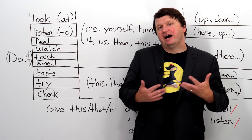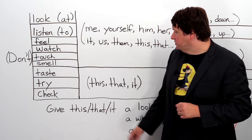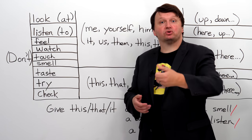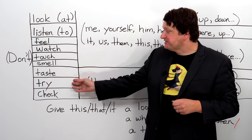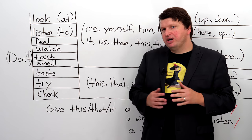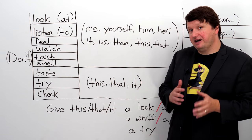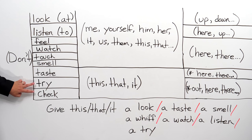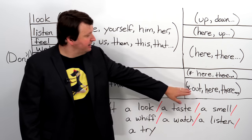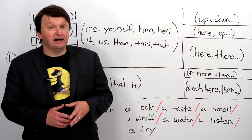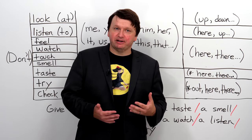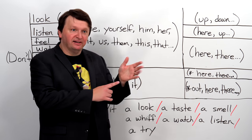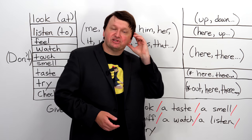Try and check can both mean to sample something. Try this, try that, try it — usually to taste food when we're talking about sensory verbs specifically. You can also ask someone to check something — to verify its taste, for example. With phrasal verbs, you can say check it out or try it out — these are phrasal verb imperatives. Check it out means hey look at this, or try this thing, or listen to this song.